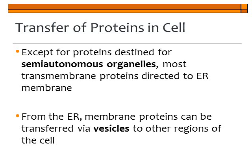Once a protein is synthesized and has gone through glycosylation, it can be directed into the endoplasmic reticulum membrane — unless it's destined for the semi-autonomous organelles like the chloroplast or mitochondria. Most proteins go into the ER, go through processing and glycosylation, and are then put into vesicles and sent to other regions within the cell.